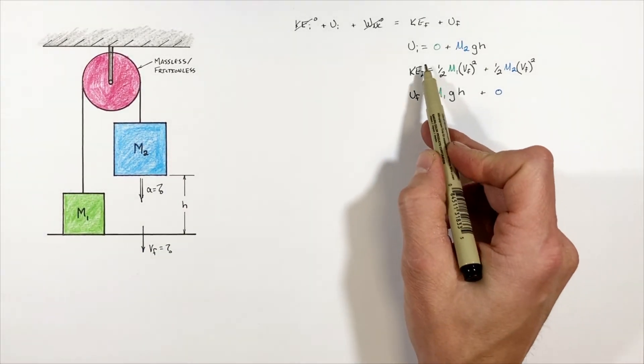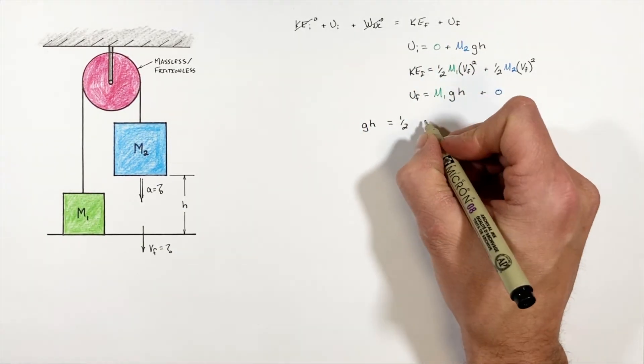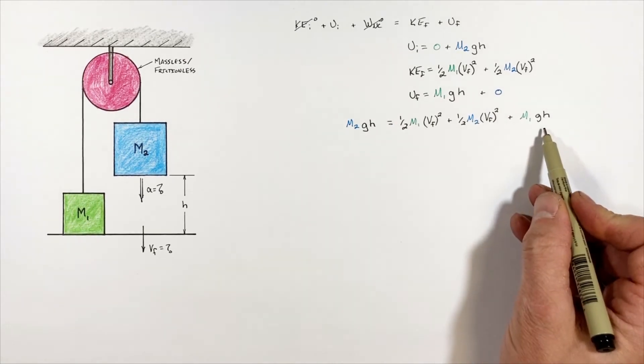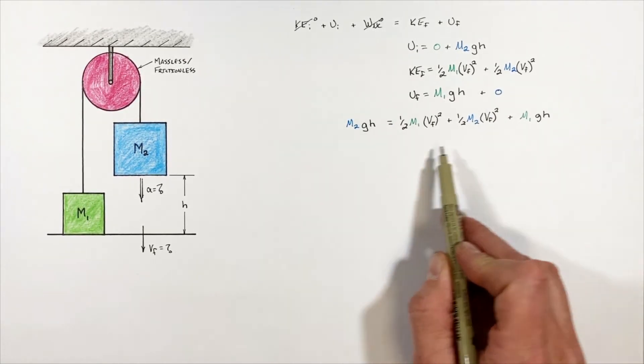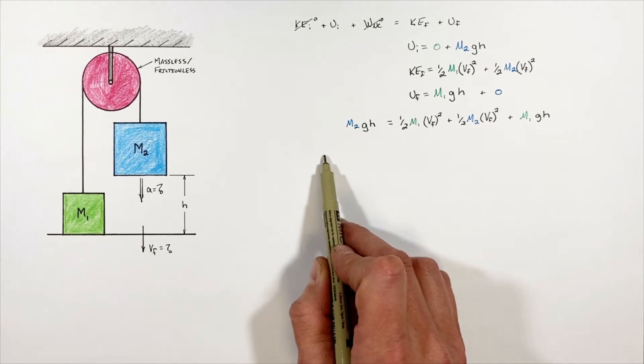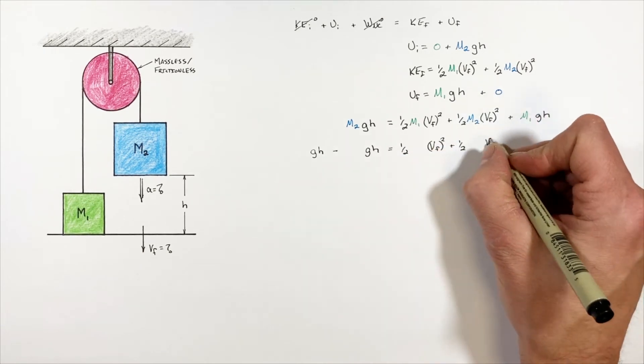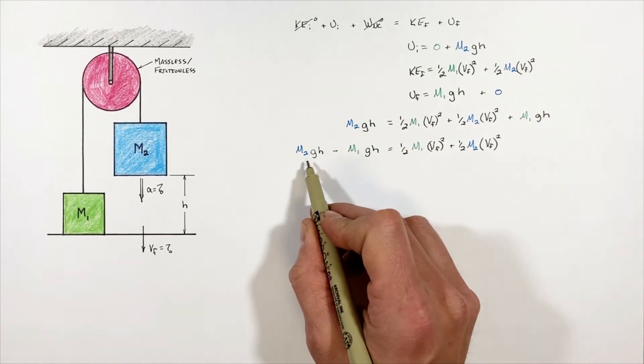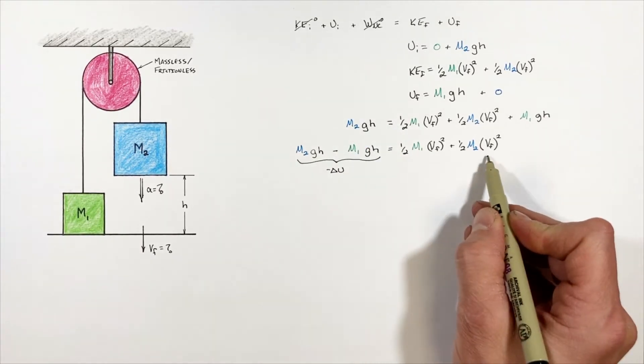So substituting these three functions into our work energy theorem, we're going to get this expression. Now you'll notice we have a potential term here as well as here. So I'm simply going to combine these so we have all of our potentials on one side and kinetic on the other. So ultimately what we have now is a loss of potential on one side of our equation and an increase in kinetic on the other.